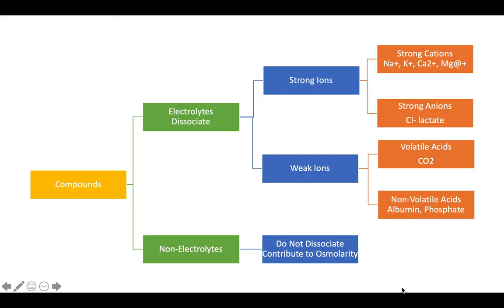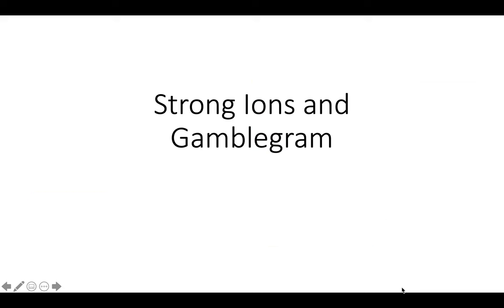This is simple to explain by knowing what strong and weak ions are. Compounds are divided into electrolytes, which dissociate easily, and non-electrolytes, which do not dissociate — these contribute to osmolarity. Electrolytes can be classified into strong ions, further split into strong cations with a positive charge and strong anions with a negative charge, and weak ions, which include volatile acids like carbon dioxide and non-volatile acids like albumin and phosphates.